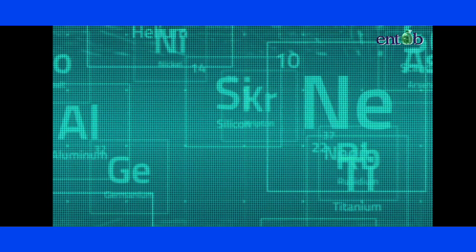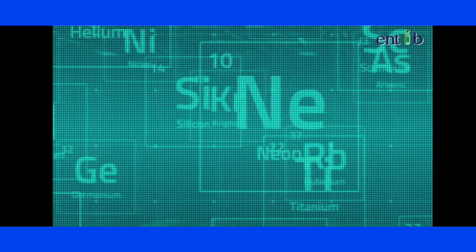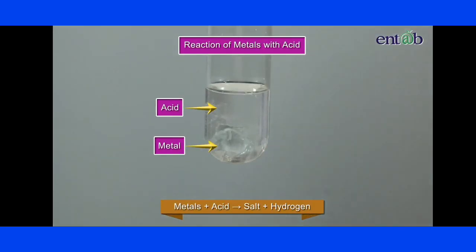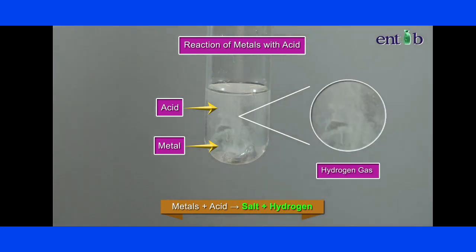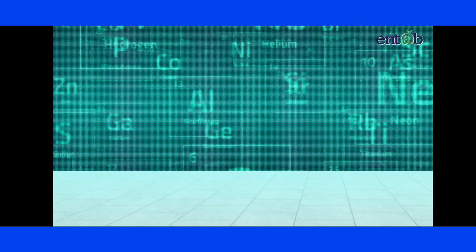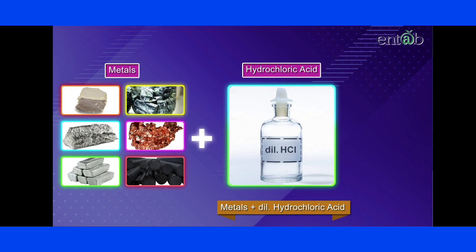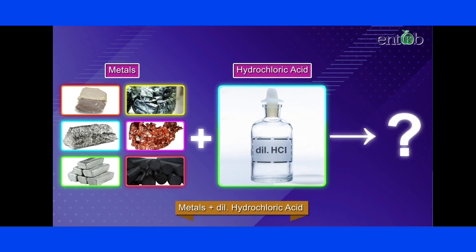We have learnt in the previous chapter as well that metals react with acids to form salt and hydrogen gas. Let's now observe a few important reactions between metals and dilute hydrochloric acid, i.e. dilute HCl.